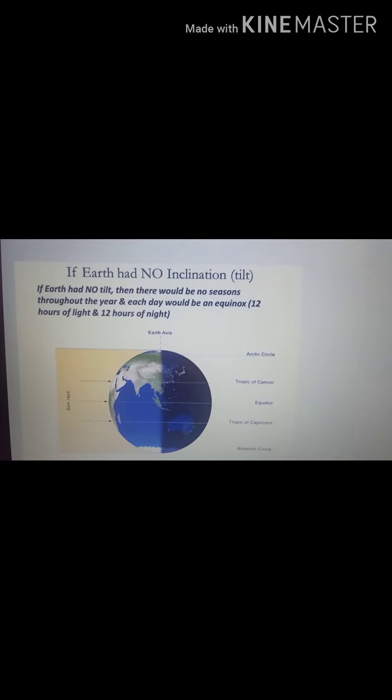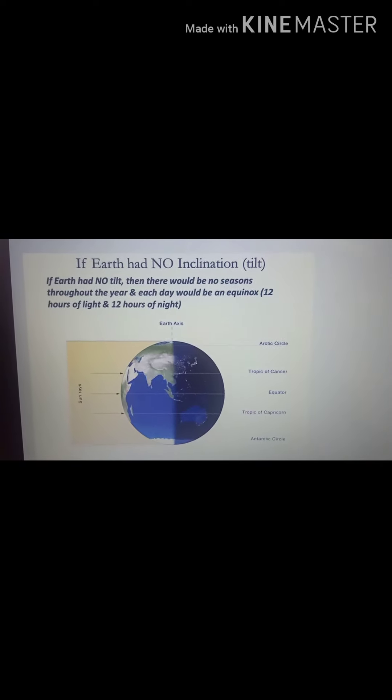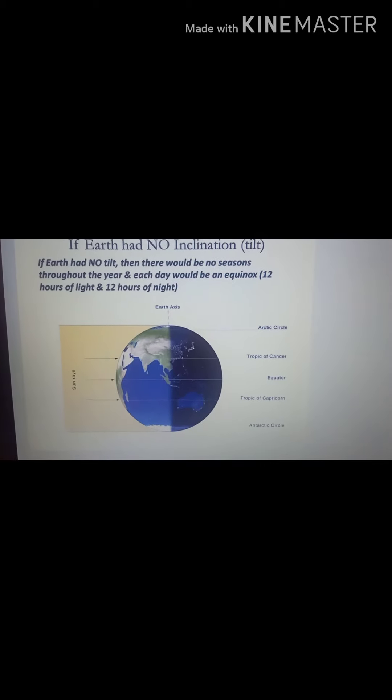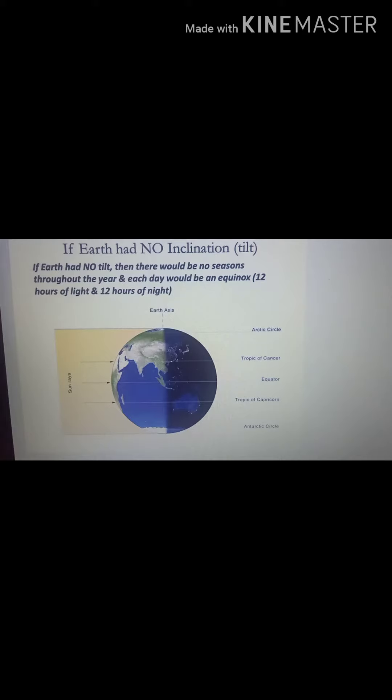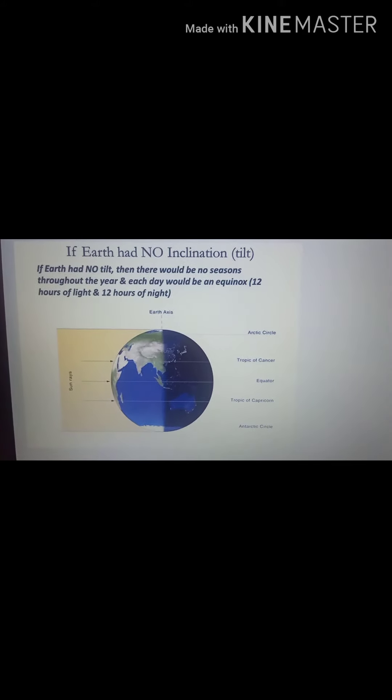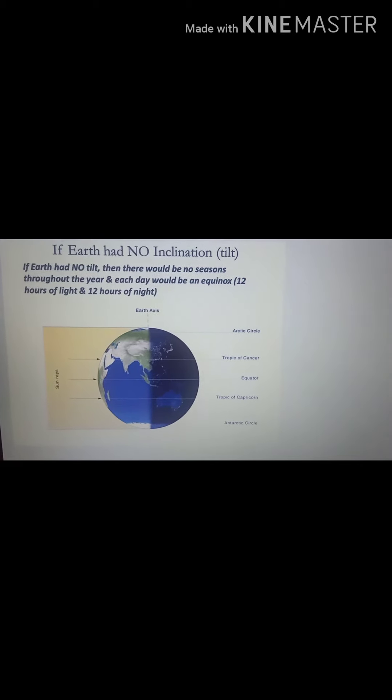If the earth's axis was not tilted but if it was vertical then there would be no seasons on earth. Throughout the year, as we have seasonal changes this would not have happened on earth. All the places on earth would have had 12 hours of day and 12 hours of night if the earth's axis was not inclined.